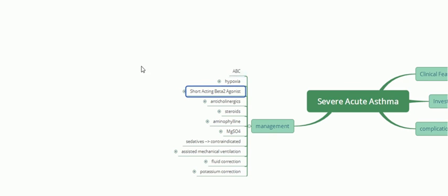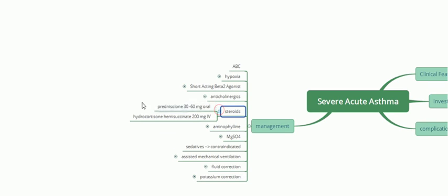The steroids used are prednisolone 30 to 60 mg orally, or hydrocortisone hemisuccinate 200 mg IV. Hydrocortisone is given intravenously and prednisolone is given orally. They take at least half an hour to start acting, which is why they are combined with short-acting beta-2 agonists from the beginning.